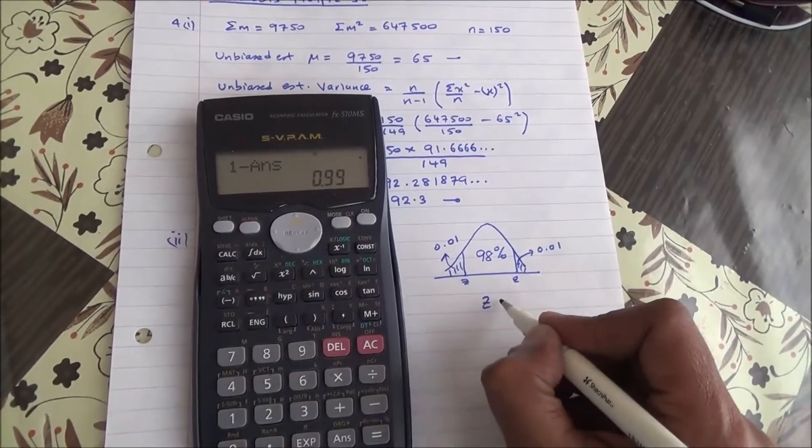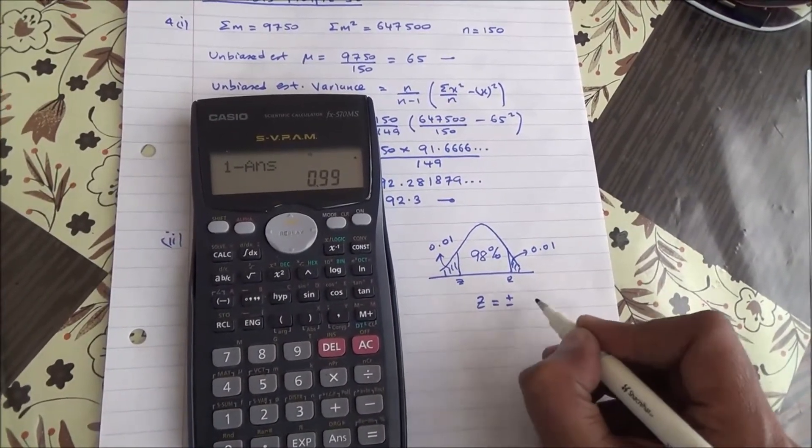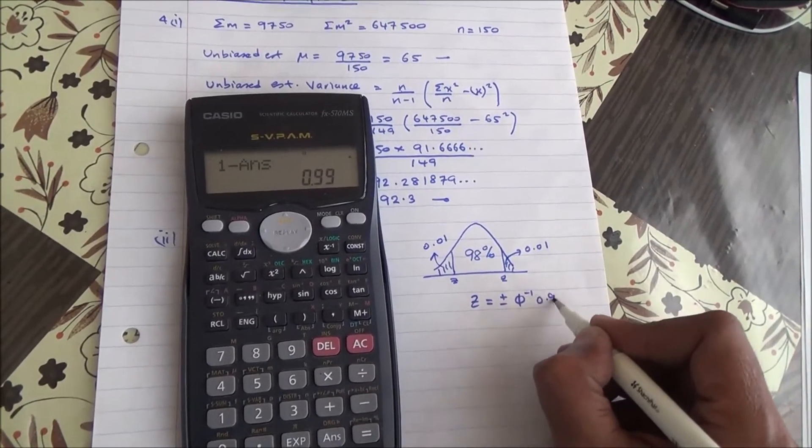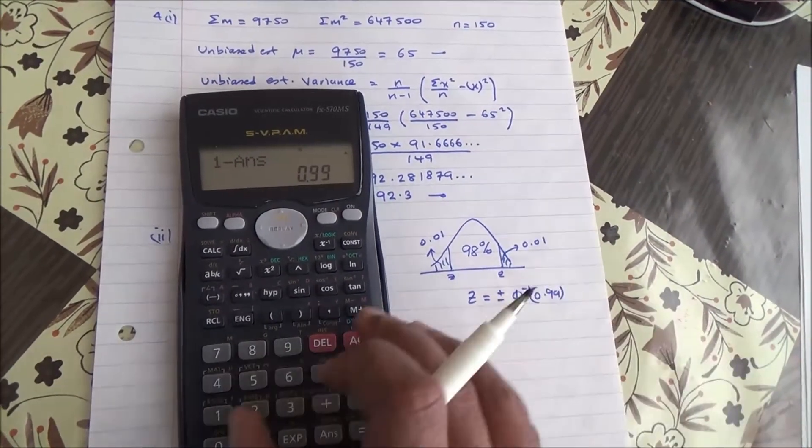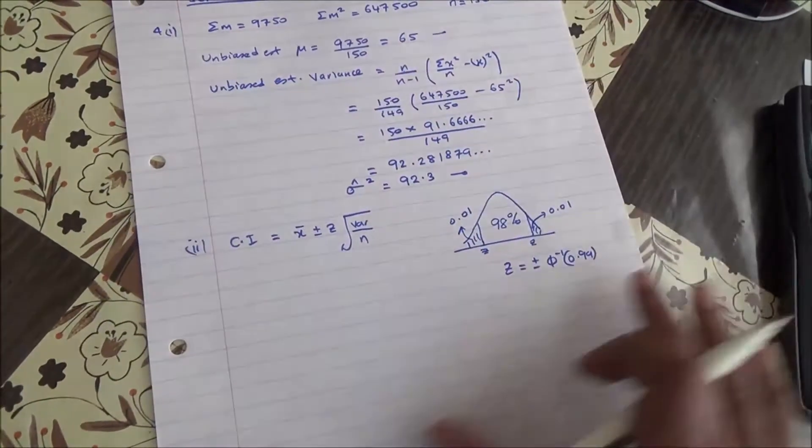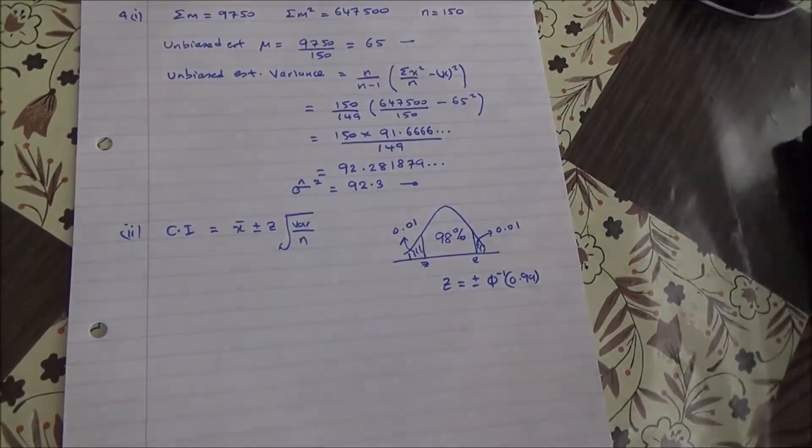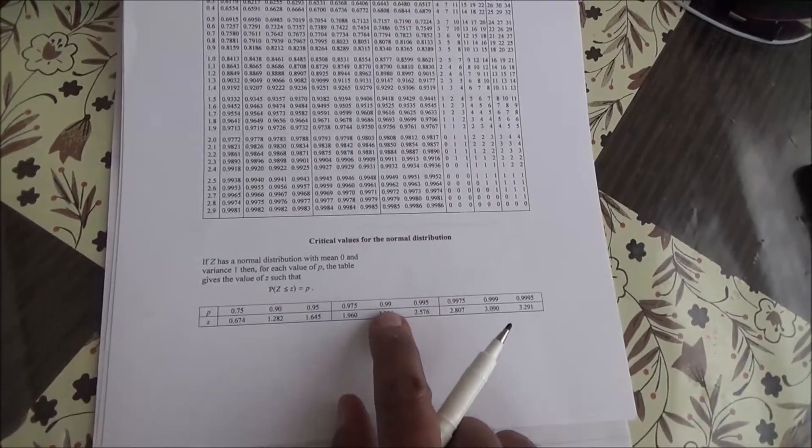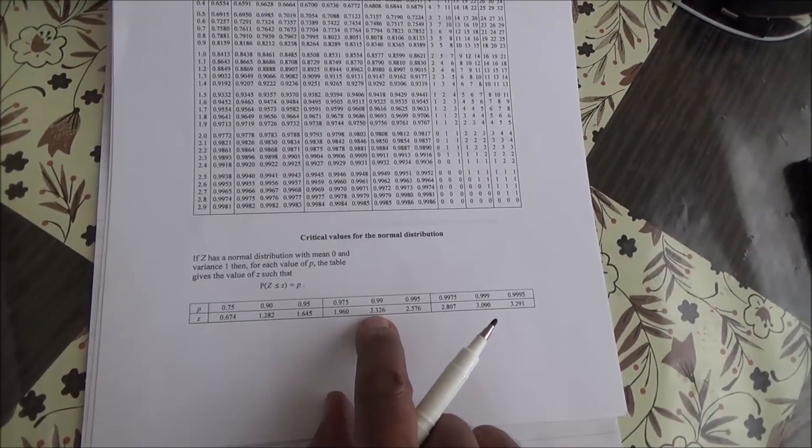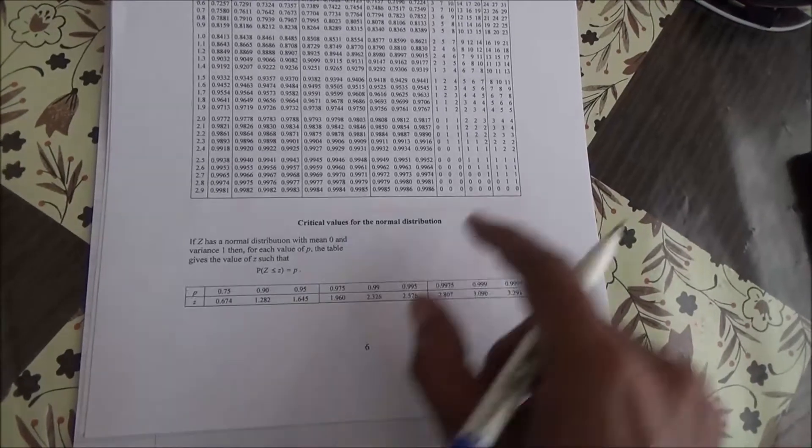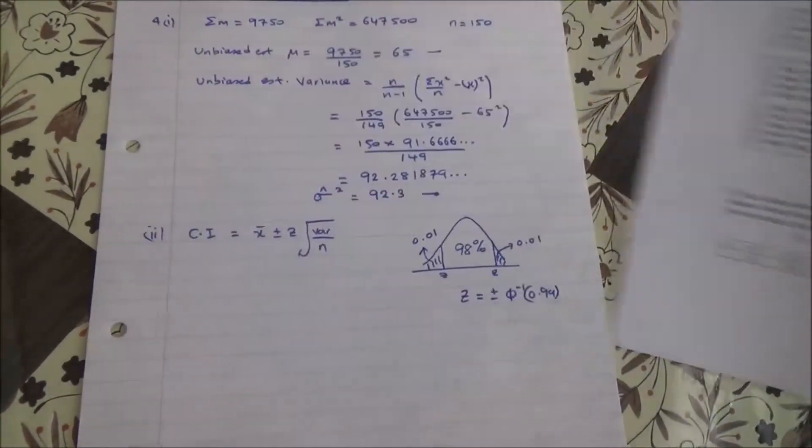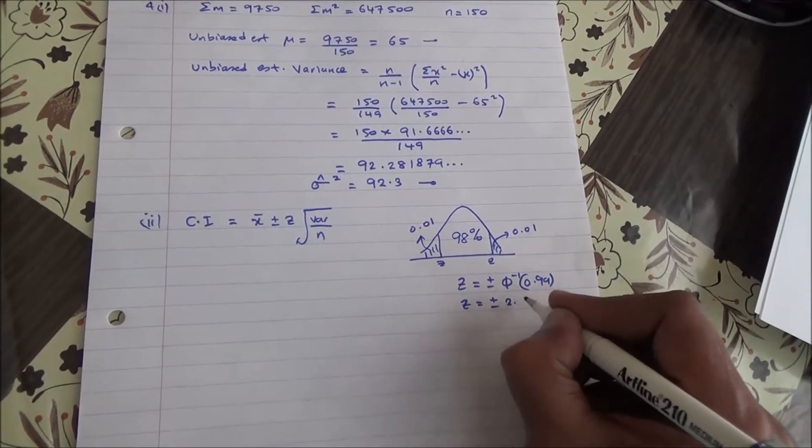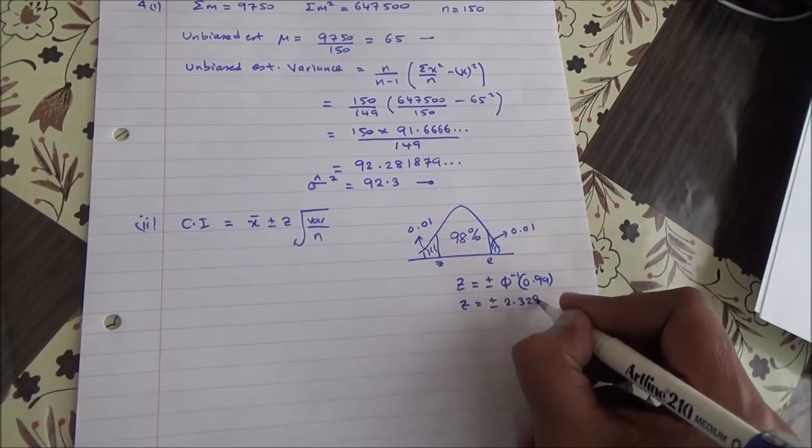So z is going to be plus or minus the inverse phi of 0.99. Let's check this out from our table. 0.99, so that's going to be 2.326. All right, so z is going to be plus or minus 2.326.